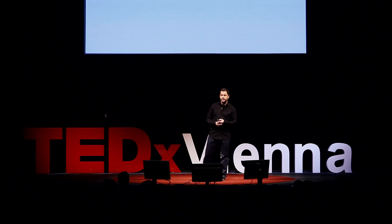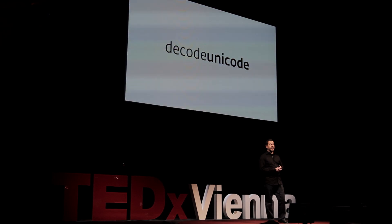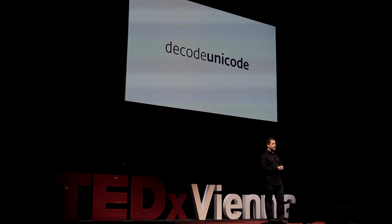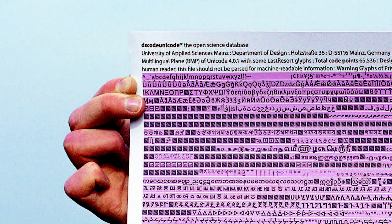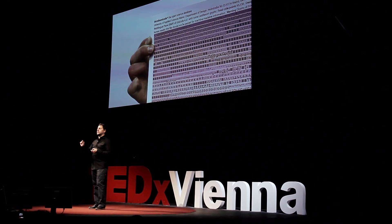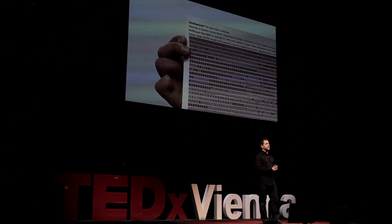I'd like to introduce you to the strange and bizarre world of Unicode, and I would like to show you what we mean by decoding Unicode at the University of Applied Science in Mainz, Germany. Unicode is a technical standard, an encoding standard for characters. To see the scope of the subject, we had the idea to produce, design, and print a poster to see each and every character of Unicode on it.